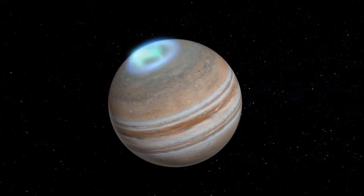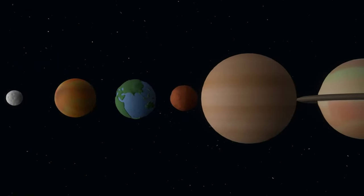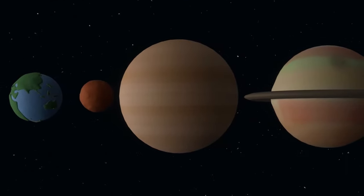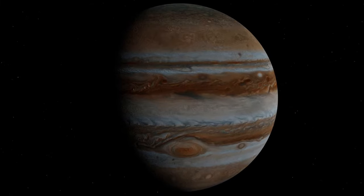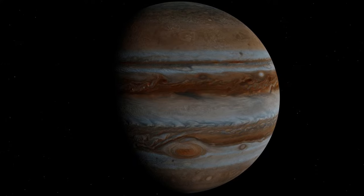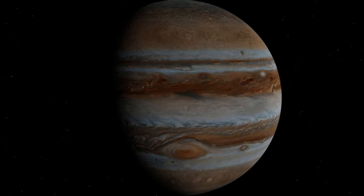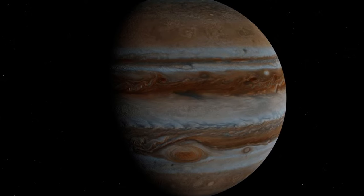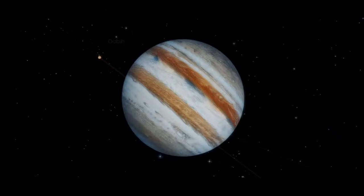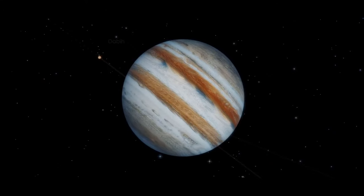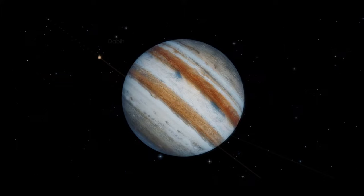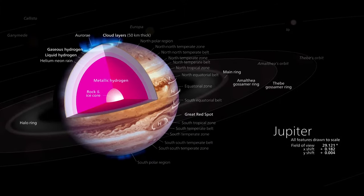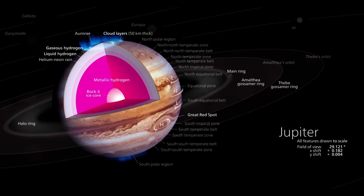Jupiter is the fifth planet in the solar system and the largest of all. Its size is impressive — it has a mass two and a half times that of all the other planets combined, and its diameter is approximately 86,881 miles (139,822 kilometers). It is a gas giant, mainly composed of hydrogen and helium. Although it does not have a solid surface, it is believed to have a rocky core at its center.